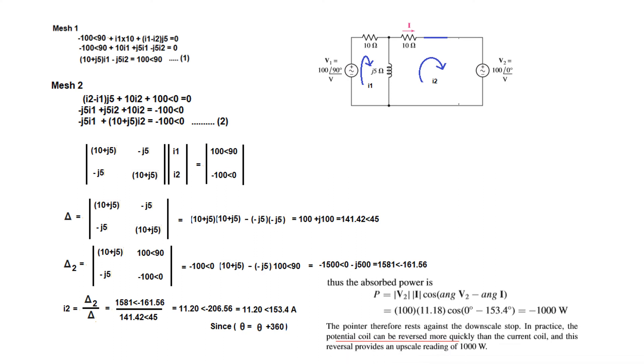Now minus means what? Since it is negative, therefore the pointer will rest against the downscale slope. So the pointer of the meter, instead of going towards this, will be flipping towards left. And so in practice, the potential coil can be reversed more quickly than the current coil, and this reversal will provide you an upscale reading of 1000 watts.